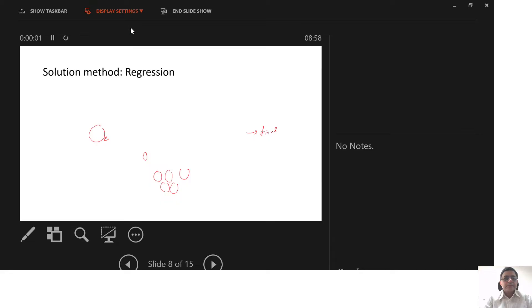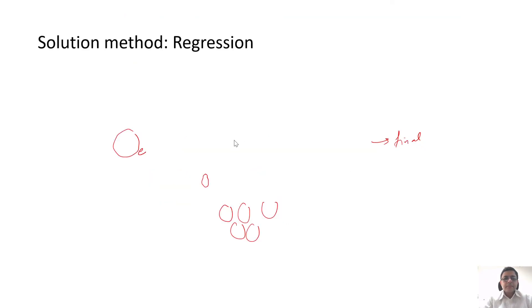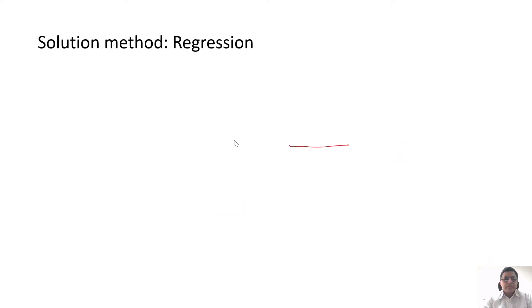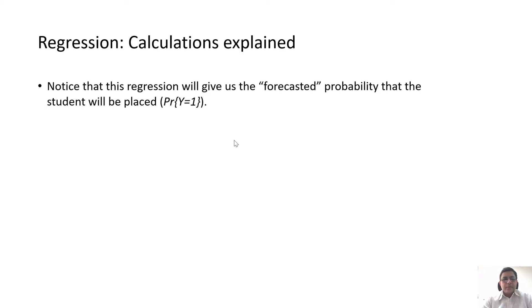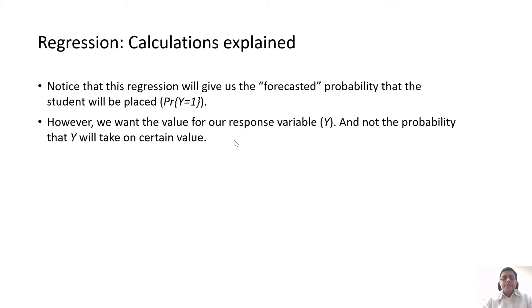Now let us go back and discuss some logic. We have seen the Excel sheet; now let us come back to logic. We have tried to explain the calculations in the Excel sheet itself, so let us put some logic behind all this. First, we saw that the Excel sheet calculates the probability that the student will be placed — that was the probability of y equal to 1, the forecasted probability. This is the probability that the model predicts. Our response variable, remember, is only binary.